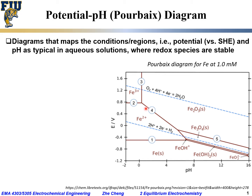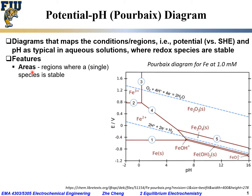That means the iron species such as Fe³⁺ and Fe²⁺ would have a concentration of 1 millimolar. The features of such a Pourbaix diagram include, first, areas — regions where a single species is stable. For example, in the upper left-hand corner region, Fe³⁺ would be stable. If the solution potential is above roughly 0.8 V with pH below around 0, we would have Fe³⁺ as the stable species. Below it, we have the region of Fe²⁺, which means within that boundary, Fe²⁺ would be thermodynamically stable.